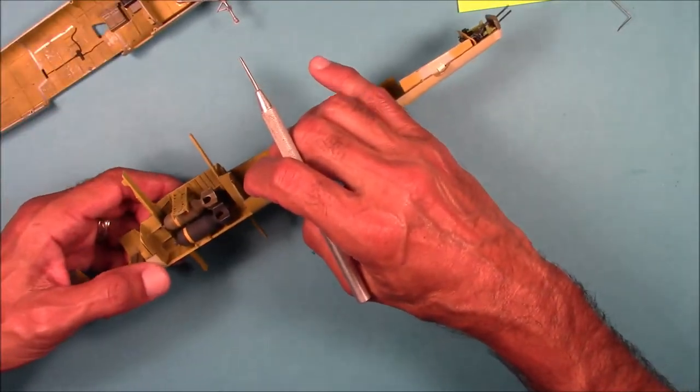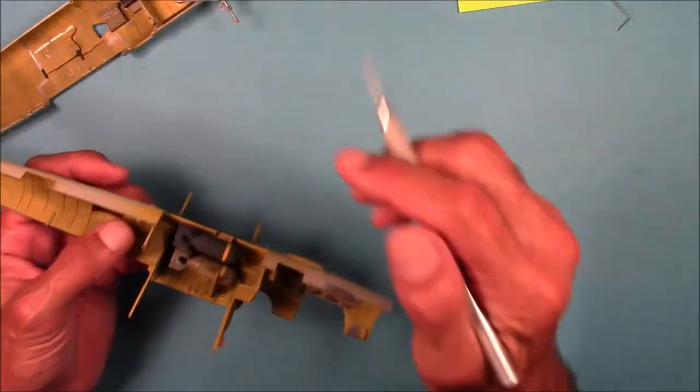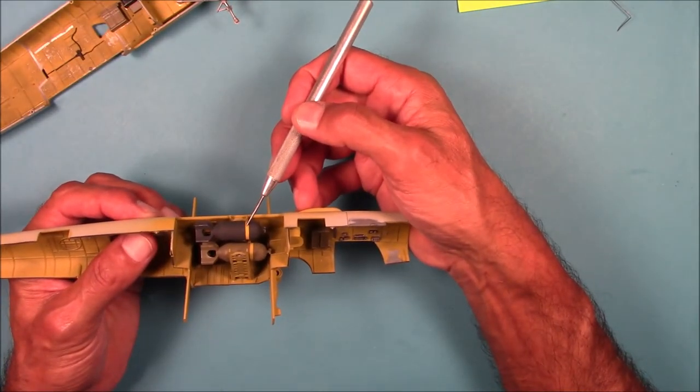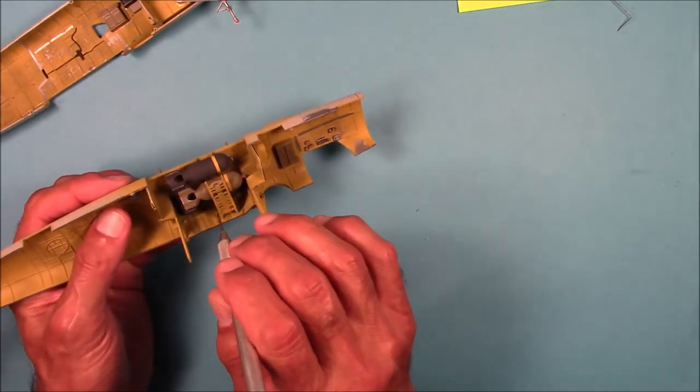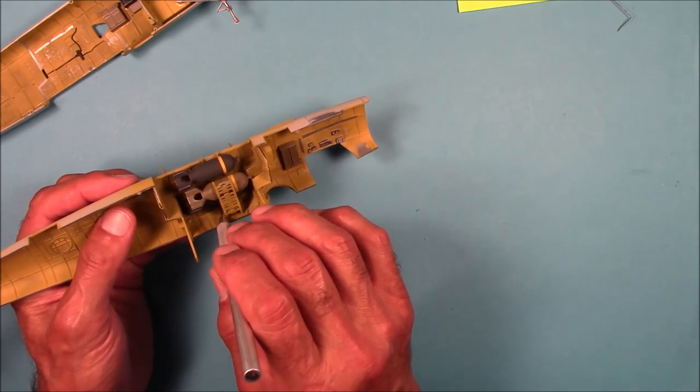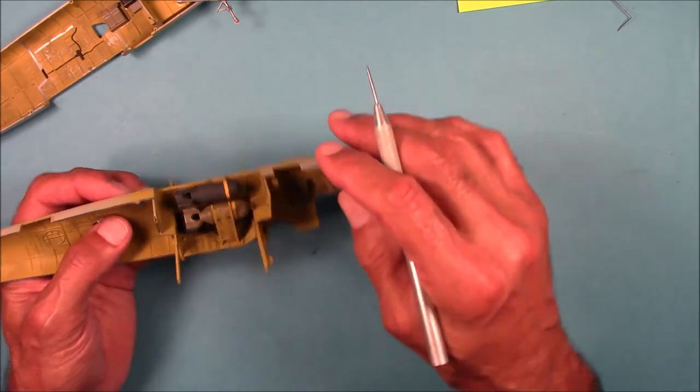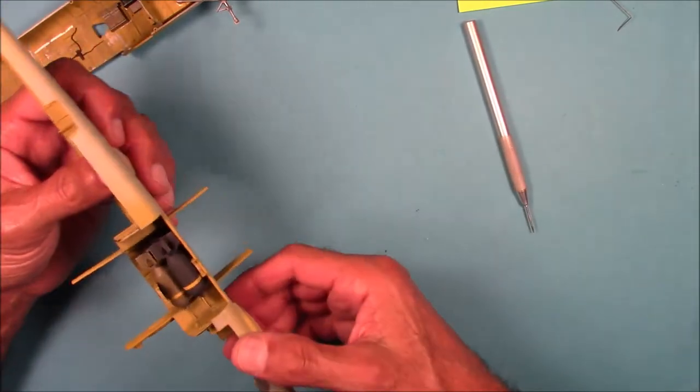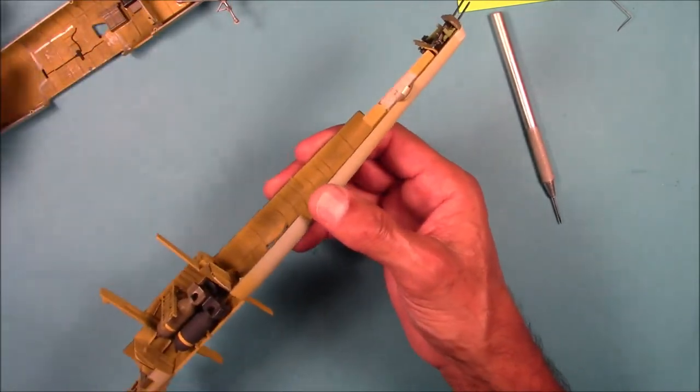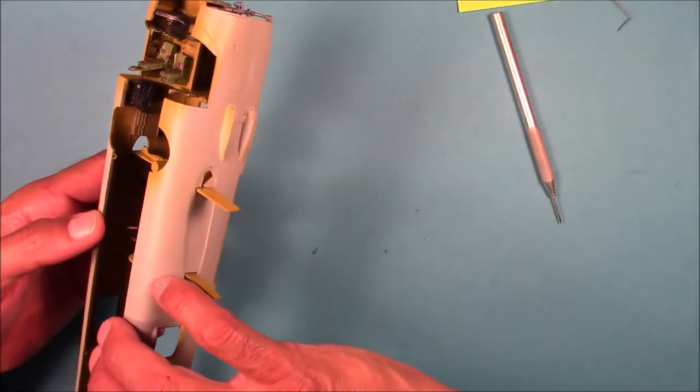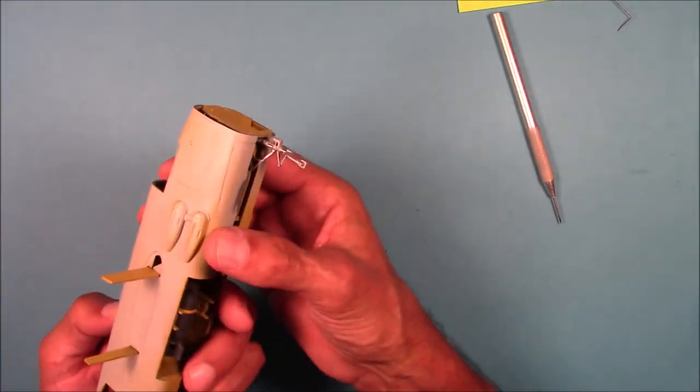And then what I did was I installed the double bomb rack first with the fuselage open, and that allowed me to properly position the top parts of the racks onto the slight indentations down here. And then to install the single bomb rack, what I did was I closed up the fuselage almost all the way.